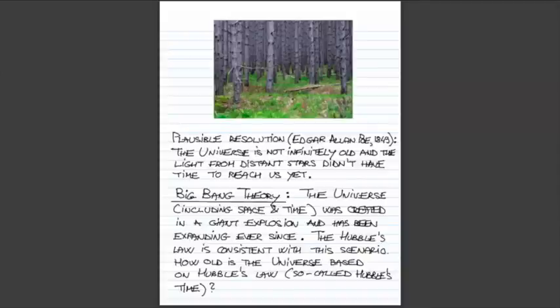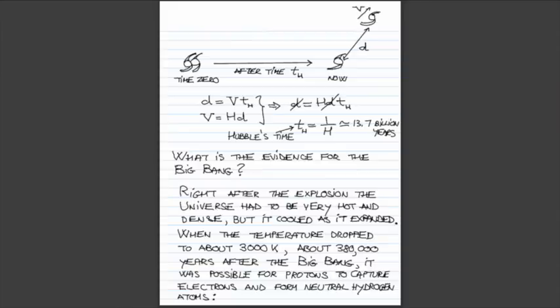That time obtained from Hubble's Law is often referred to as Hubble's time. The argument goes like this: at time zero, just soon after the Big Bang where everything was much closer, two galaxies were much closer to each other, and now they are separated by some distance d. This is our Milky Way, and we see another galaxy at distance d receding from us with certain recession velocity v that we can determine from the redshift of its light.